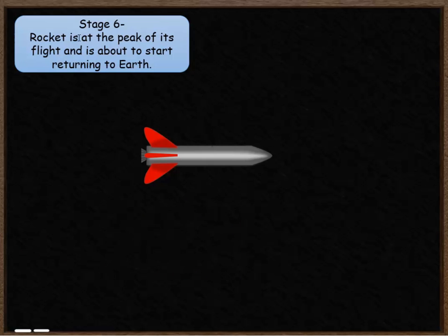In stage six, the rocket is right at the peak of its flight. So it's just reached the peak and it's now stationary and about to start returning to Earth. The only force acting on the rocket in these circumstances is the force of gravity. So the rocket is pretty much stationary. It's not moving at all. It's just about to be caught and come back down.